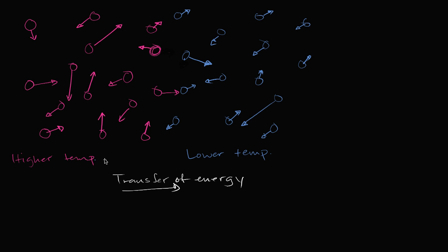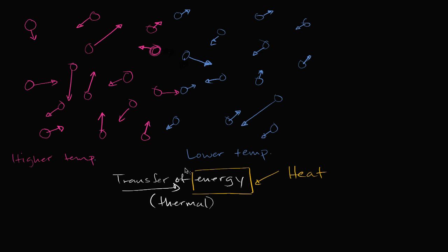This transfer of energy is a transfer of thermal energy — we're talking about temperature, so we say thermal. You're going to start with higher average kinetic energy in the magenta and lower average kinetic energy in the blue, and energy transfers from the magenta to the blue, from higher temperature to lower temperature. That energy being transferred is what we call heat — this hotter gas is heating up the cooler gas. This transfer of kinetic energy through the collision of particles is called thermal conduction.